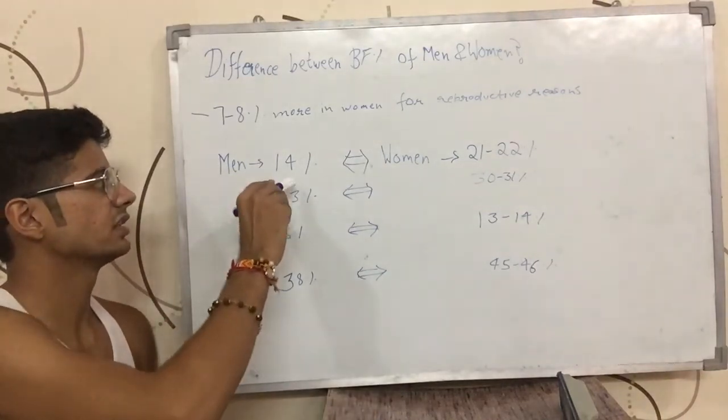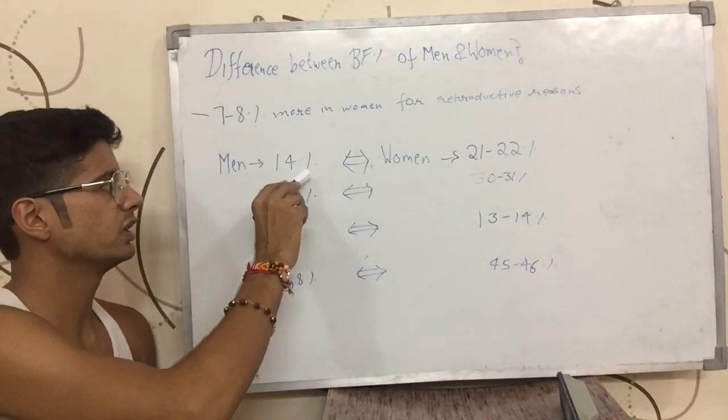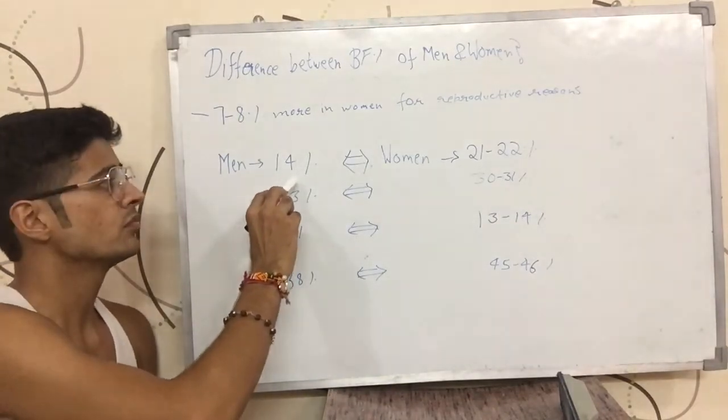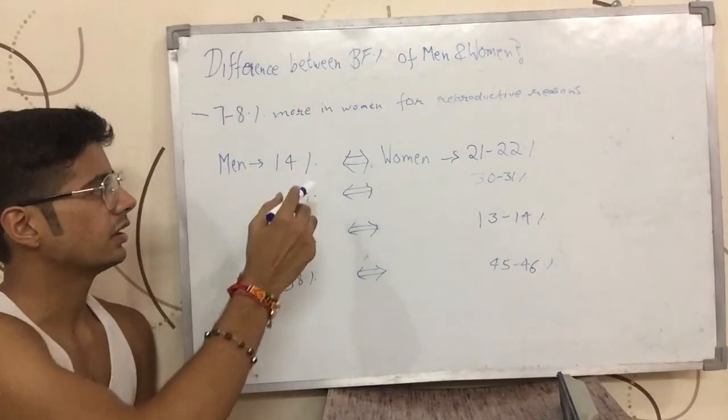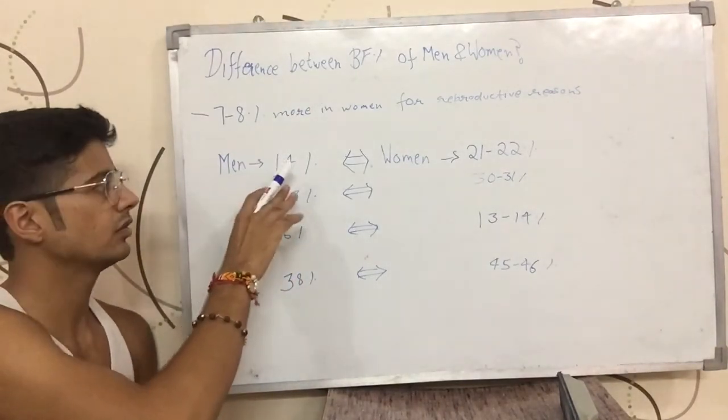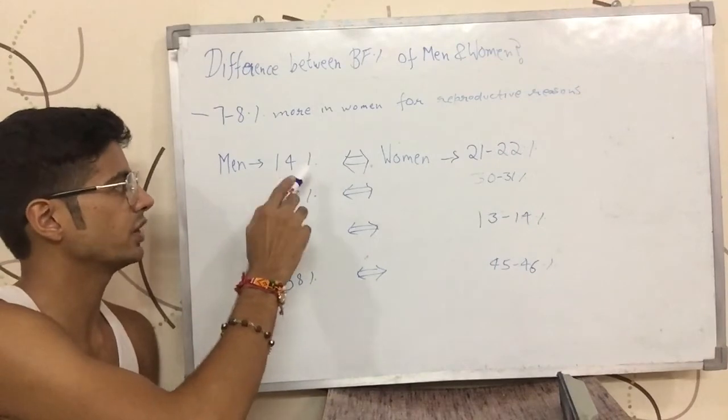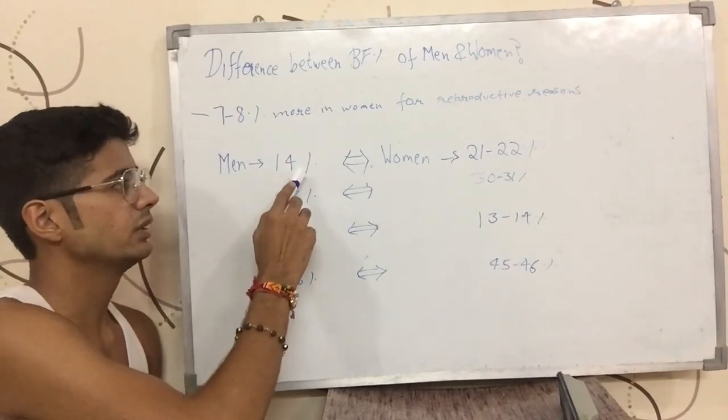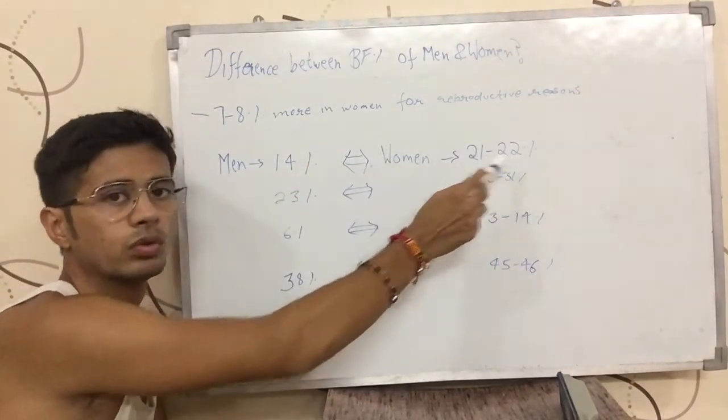What does that mean? So let's say there is a person with 14 percent body fat, he is a man. Then a woman having a similar fitness level as this man would have a body fat percentage of 14 plus 7 to 8, which is 21 to 22 percent.